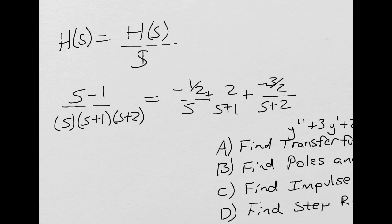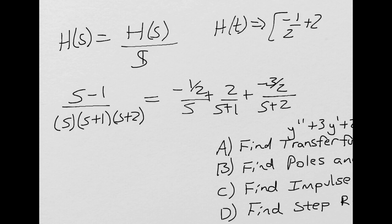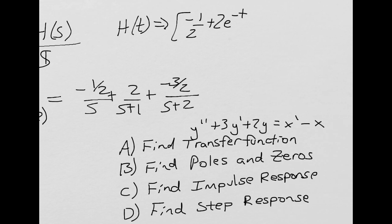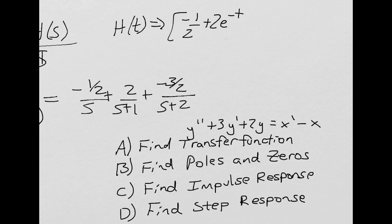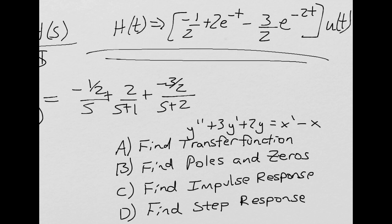So the step response — we need h(t) in the time domain. What we end up getting is (−1/2 + 2e^(−t) − (3/2)e^(−2t)) u(t). And so that is our step response. Thank you.